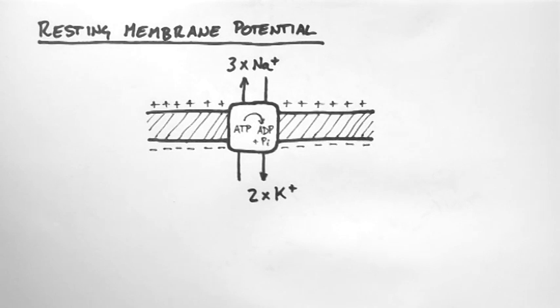Now because they attract each other, they line up on either side of the membrane. But they can't cross the membrane, and this leads to an electrical potential difference, also known as a voltage.